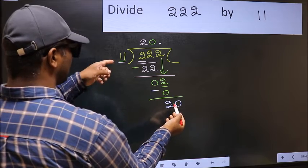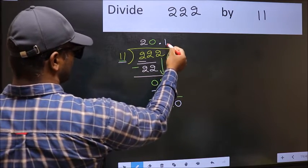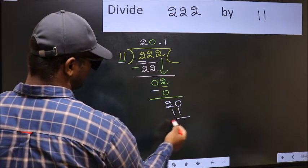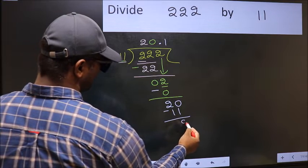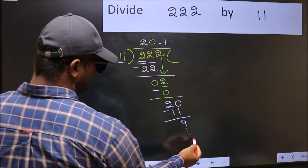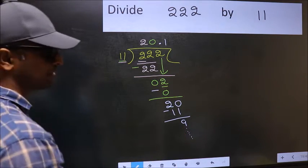A number close to 20 in 11 table is, 11 once, 11. Now, you should subtract. We get 9. And, continue the division. I am not doing that.